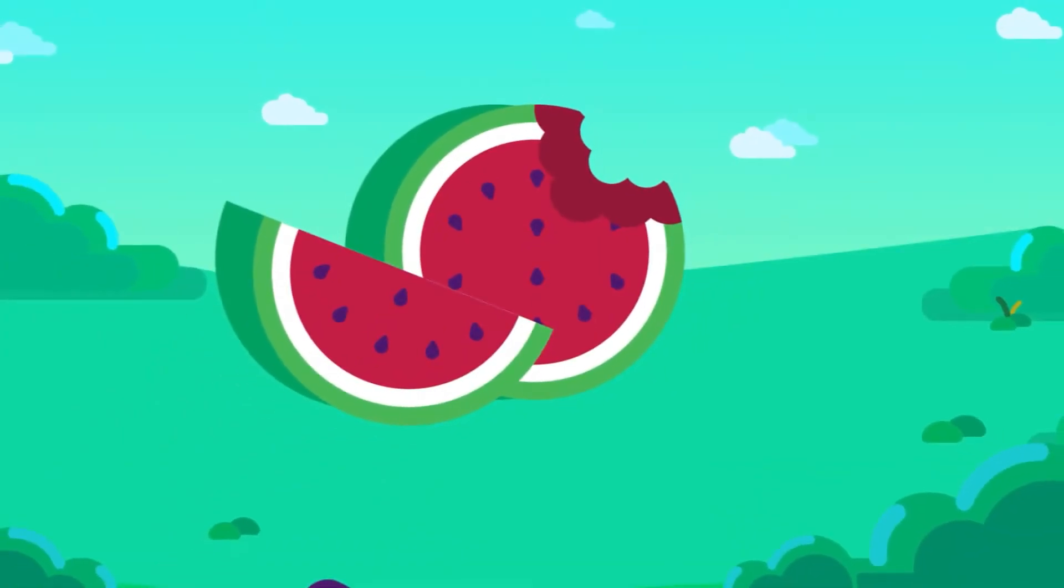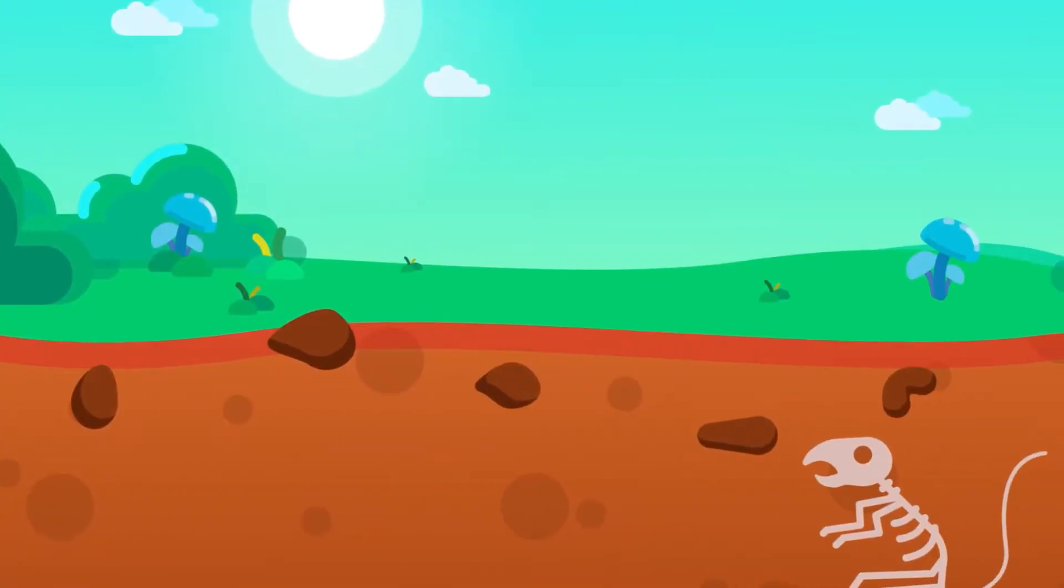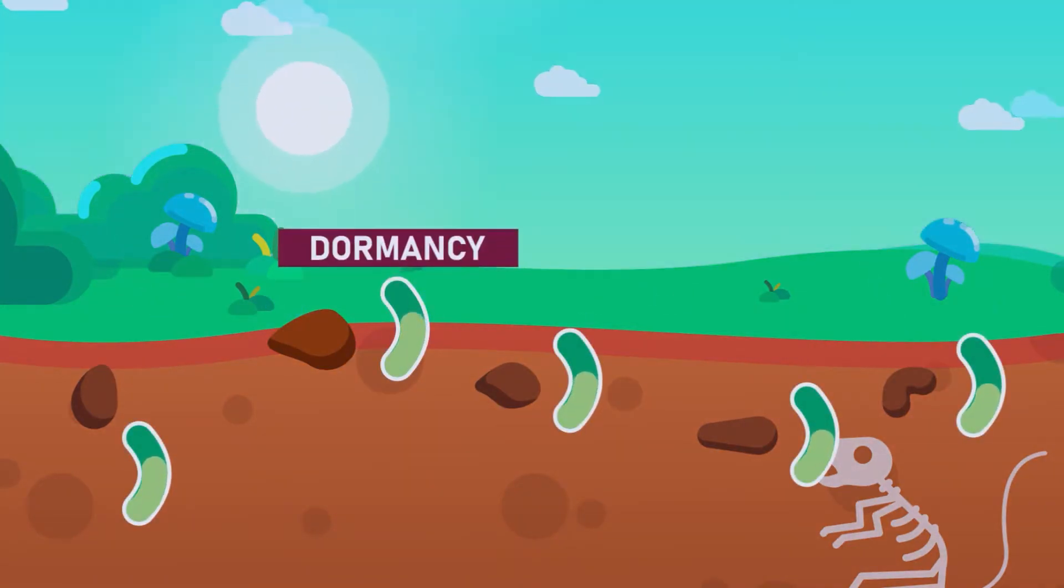The ripe seeds of plants germinate when they are exposed to favorable environmental conditions. However, the seeds of many plants do not germinate as soon as they are shed. They have to pass through a resting or dormant period during which they will not germinate, no matter how favorable the environmental conditions are.